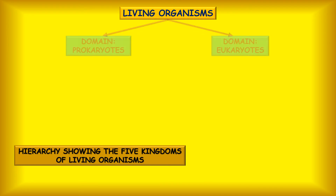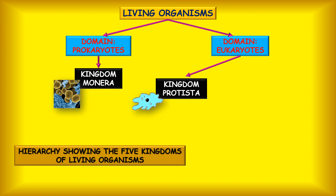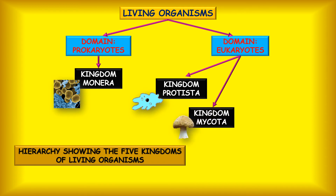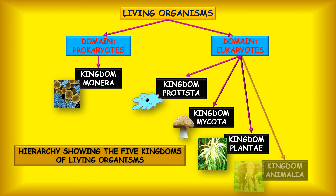In grade 7, you will learn about the five kingdoms of living organisms. The five kingdoms are: Kingdom Monera — these are the bacteria and are the only living organisms that have prokaryote cells. Kingdom Protista — these are microscopic living things that usually are unicellular and most often live in water. Kingdom Mycota — these are also called the fungi and include mushrooms and bread molds. Kingdom Plantia — the plant kingdom — these are living organisms that can photosynthesize. Kingdom Animalia — the animal kingdom — these are the living things that need plants for oxygen and energy.